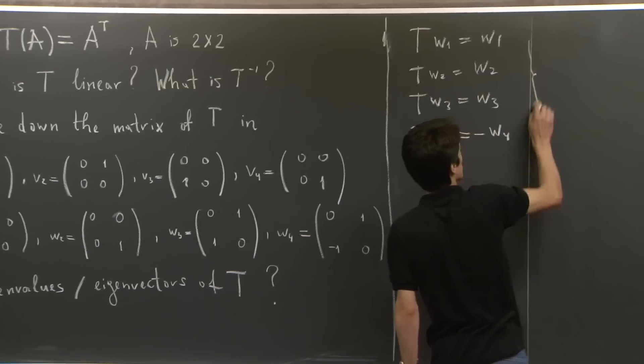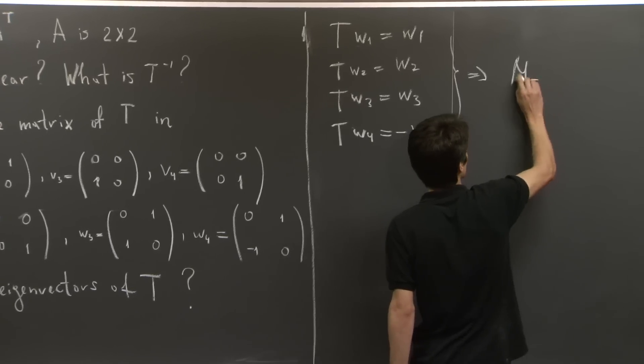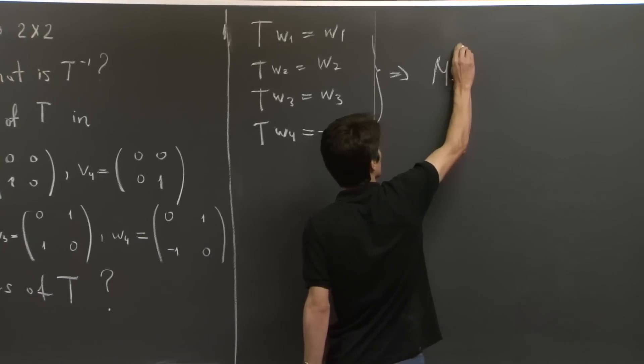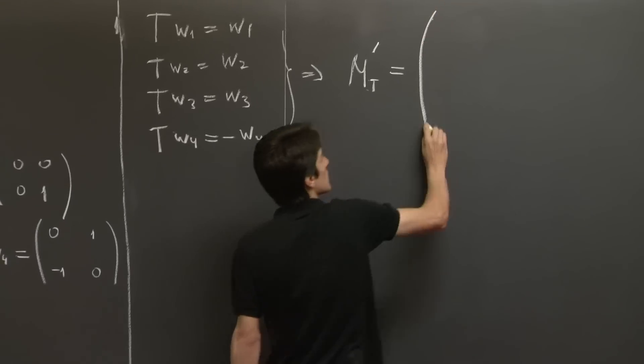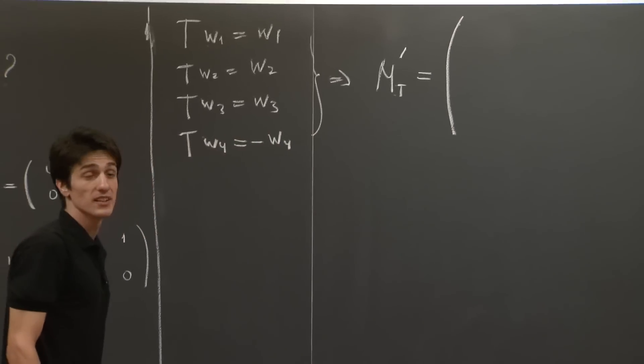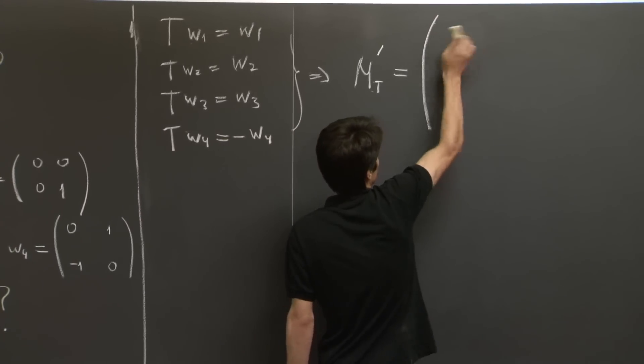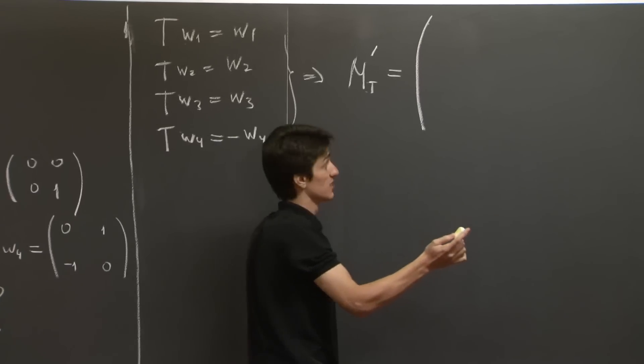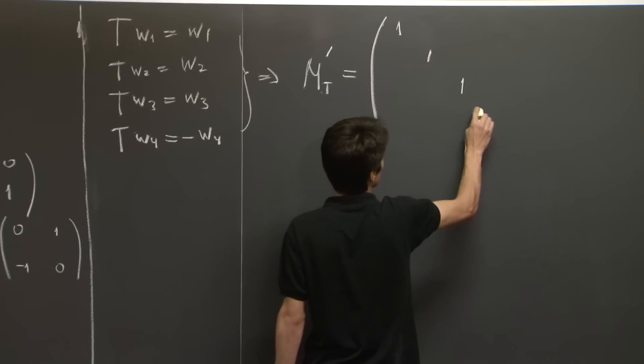So therefore, the matrix of the linear transformation T in this basis, I'm going to call the matrix M prime T, has a fairly simple expression. It's just the only non-zero entries are on the diagonal, and they're precisely 1, 1, 1, and negative 1.